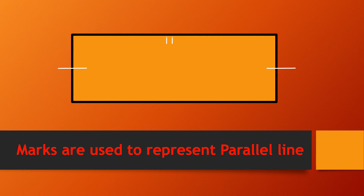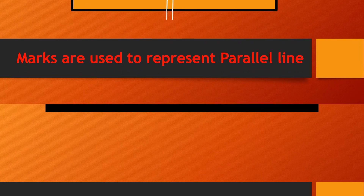We can draw these marks on shapes as well. Having the same signs on both sides means they are parallel, and having two lines means they are parallel to another two lines.